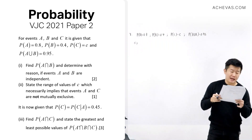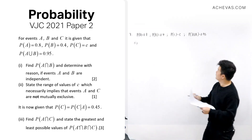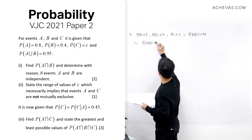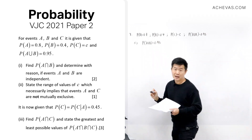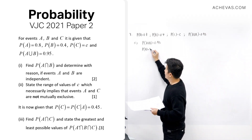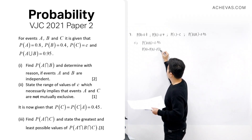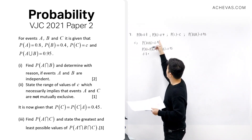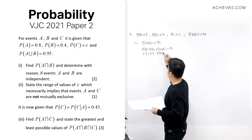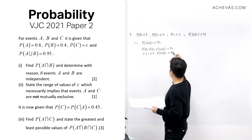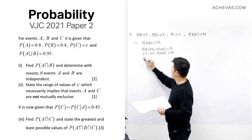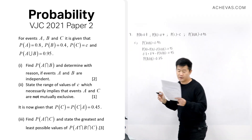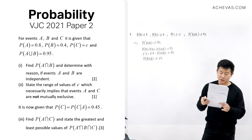Part one: let's find A intersect B. Since we are given that the probability of A union B is 0.95, and A union B equals P(A) plus P(B) minus P(A intersect B), we get 0.8 plus 0.4 minus P(A intersect B) equals 0.95. From here, probability of A intersect B equals 0.25.